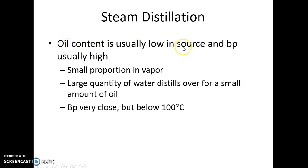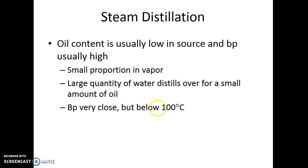Oil content is usually very low, so you have to use a large quantity of water for a small amount of oil. As you distill, it kind of breaks up the plant material and makes the oil more available. Because there's going to be very little oil, the boiling point is very close to but below 100 degrees. If it goes up to 100, most likely either your thermometer's off or the oil is not there anymore — you've distilled over all that there was.